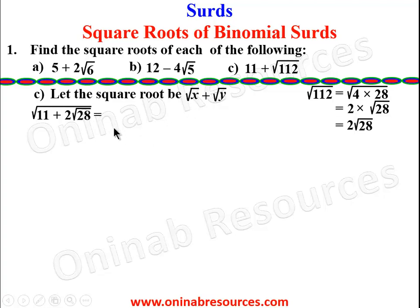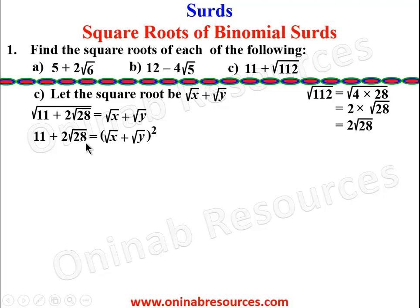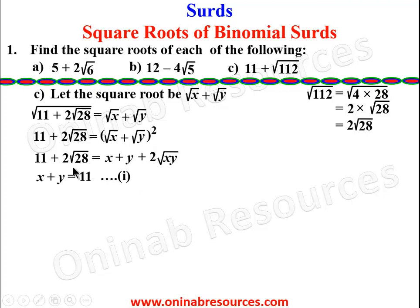We find the square root of 11 + 2√28, setting it equal to √x + √y. Squaring both sides: 11 + 2√28 = (√x + √y)² = x + y + 2√(xy). Comparing: x + y = 11 — equation 1. For the irrational part, both have 2 outside the root and √28 matches √(xy), so xy = 28 — equation 2.